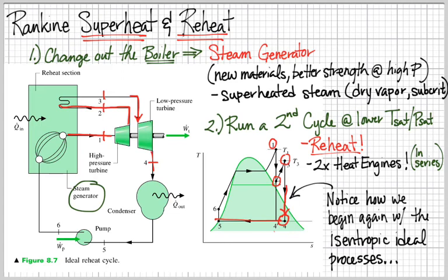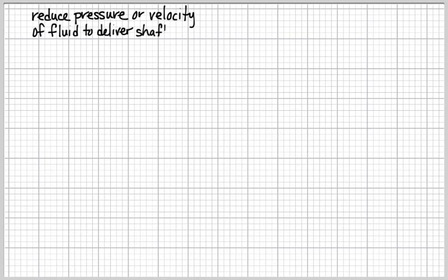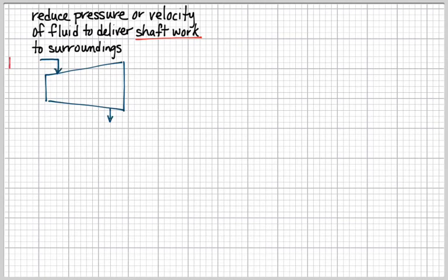Looking at the aspect of a superheated and reheated cycle, so two heat engines operating in succession or in series, we want to remind ourselves of what's happening. We are going to use a turbine to reduce the pressure or the velocity of a fluid that delivers shaft work. I'm going to have enthalpy going in at state one, enthalpy coming out at state two. The value of using enthalpy once again is that enthalpy captures both latent heat, the phase change, and sensible heat, the change in temperature.